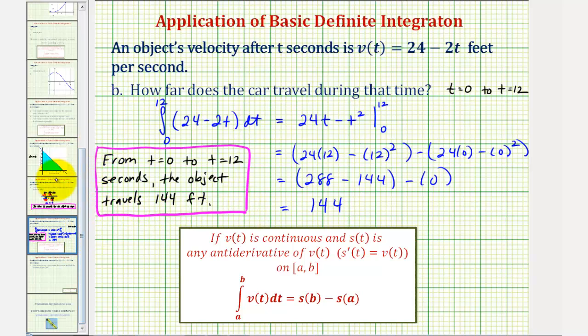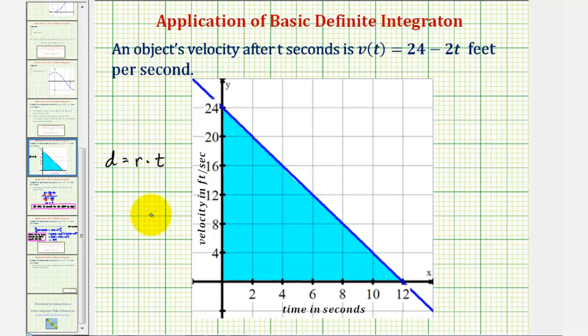If we go back to the graph just for a moment, notice how we have a right triangle with a base of 12 and a height of 24, where the area of a triangle is equal to one-half base times height.